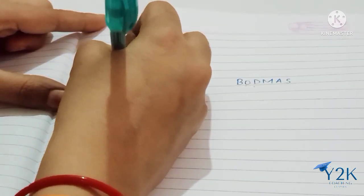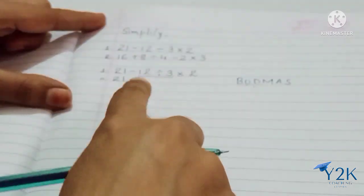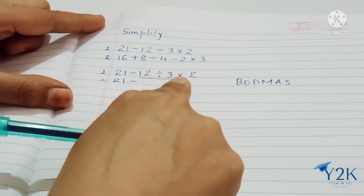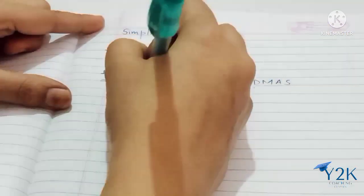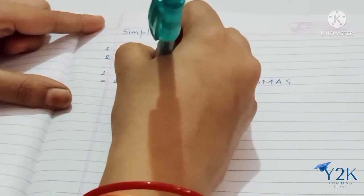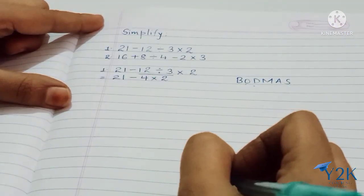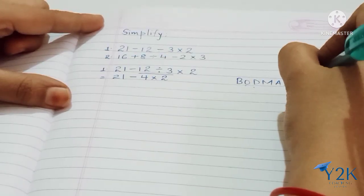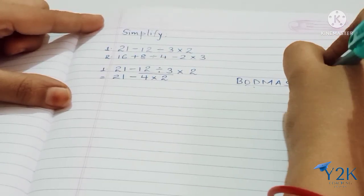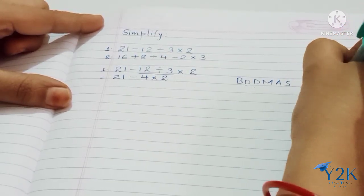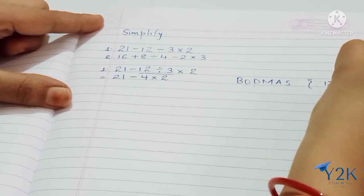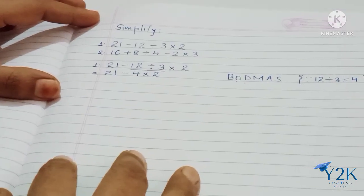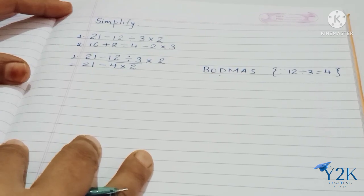Here it will become 21 minus 12 divided by 3. What is the answer? We will get the answer as 4, into 2. You can mention here that since 12 divided by 3 equals 4, that is how you got this 4.